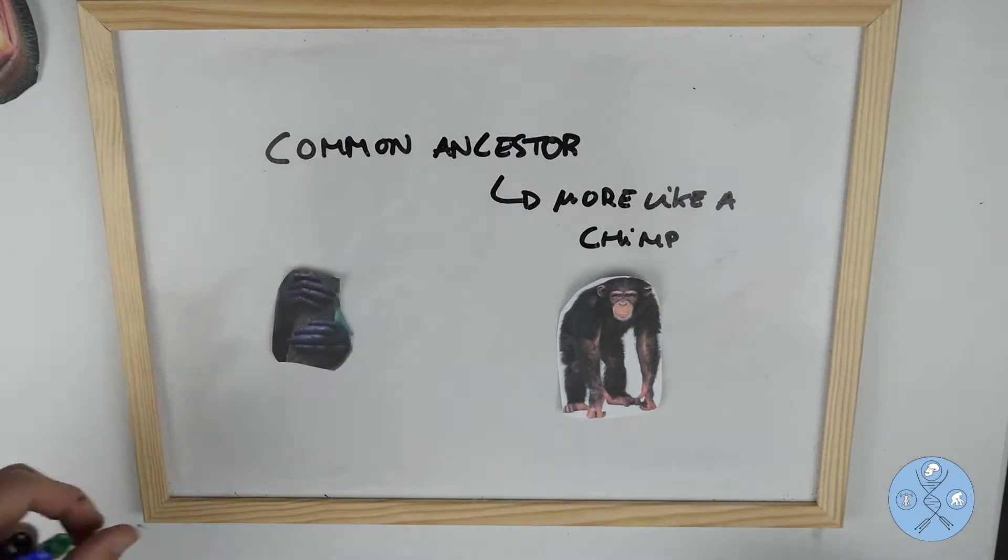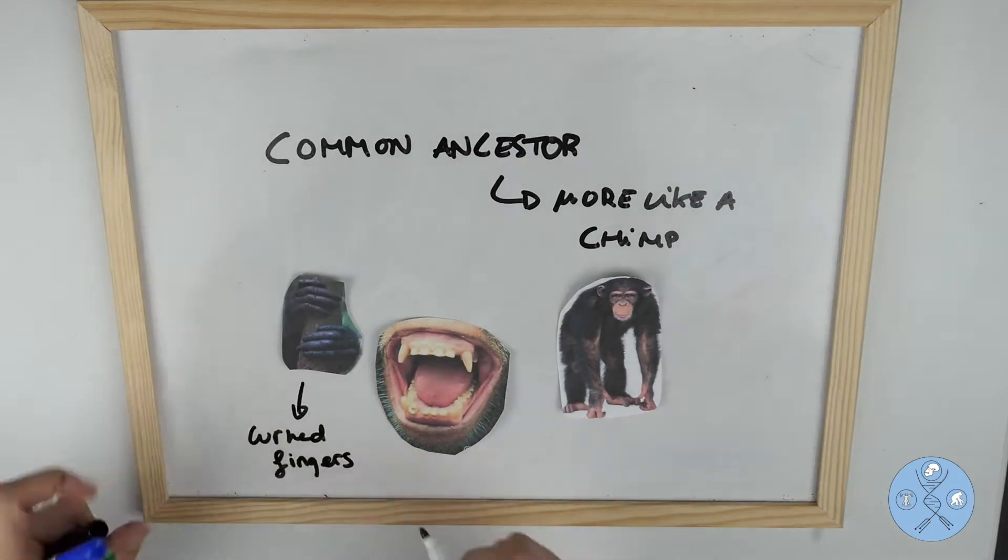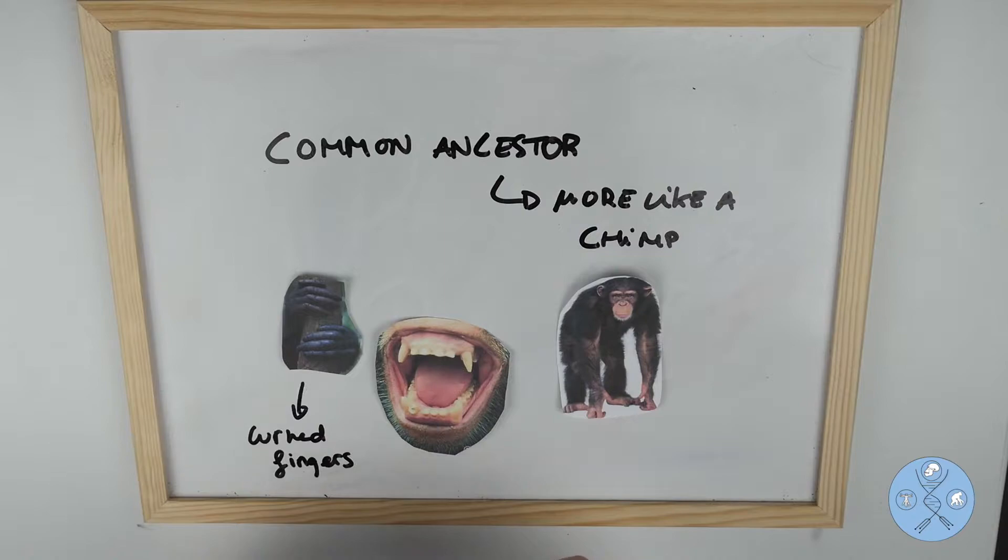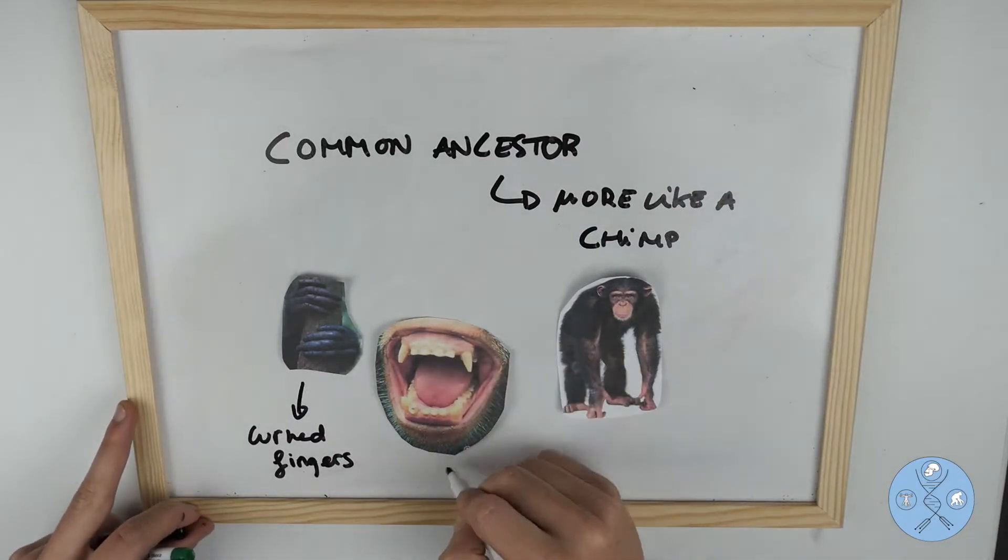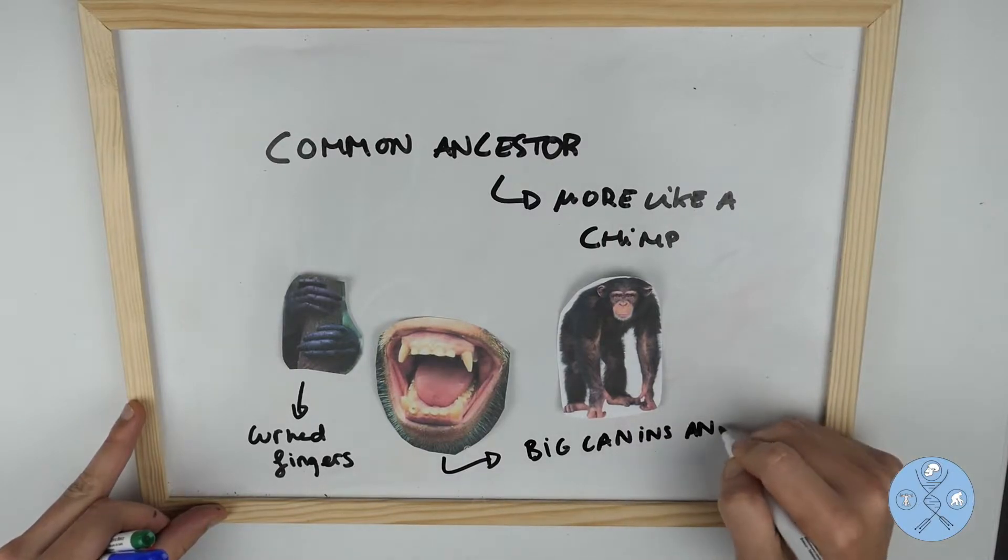This way, its skeleton should show evidence of being adapted to tree life, with curved fingers able to grasp branches. Its face would look snout-like and not flat, and its jaws would have not too big chewing teeth, big canines and big upper central incisor teeth.